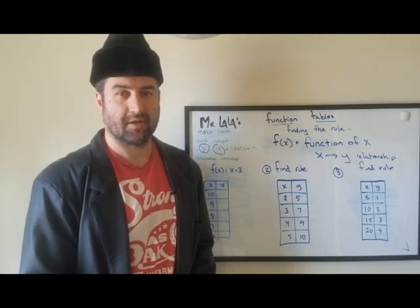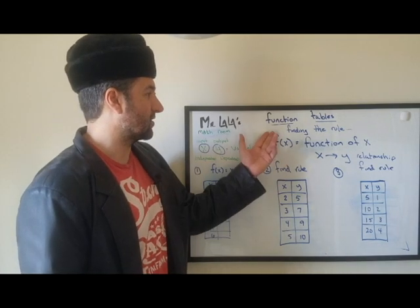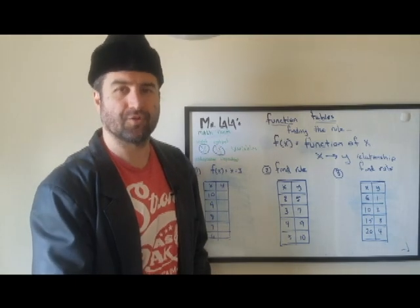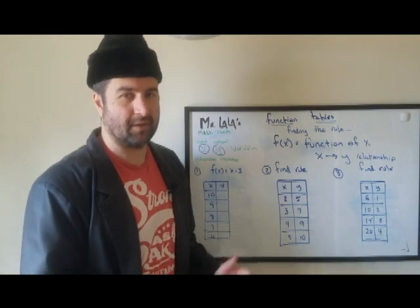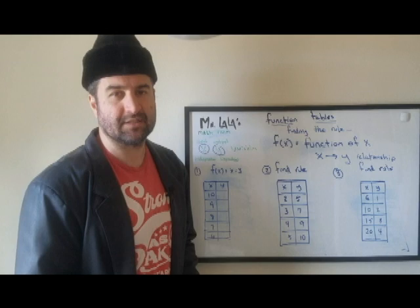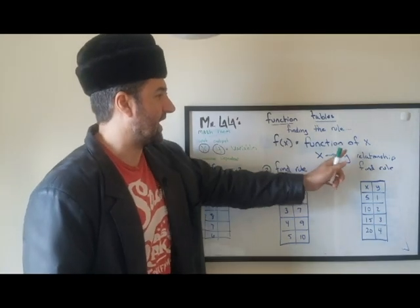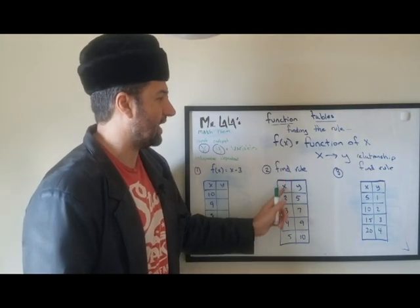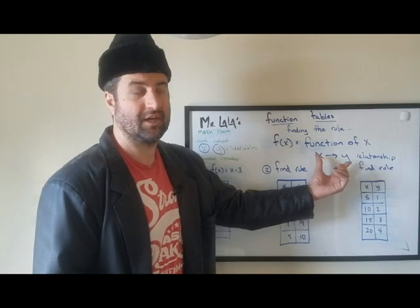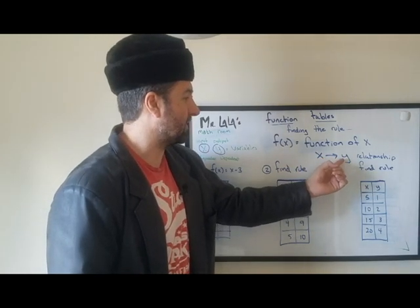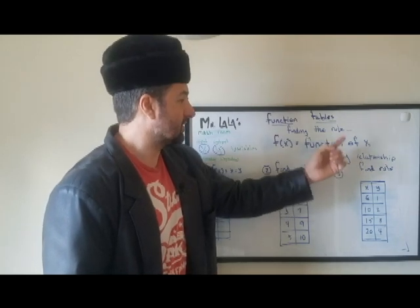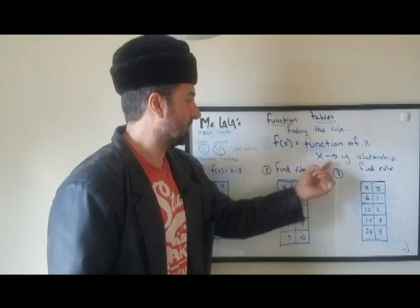Today we are learning about function tables — how to find the rule in a function table. What is a function table? Not like a table you put food on — it is a table where you put numbers. It looks like a ratio table, same thing really. It means a relationship: function of X. Something happens to X that is going to make Y. That is the relationship. Like boyfriend and girlfriend: boyfriend buys gift, girlfriend is happy. Boyfriend does not buy gift, girlfriend not happy.